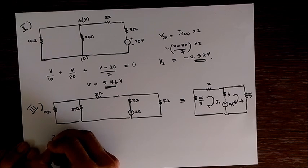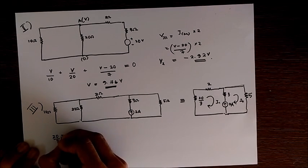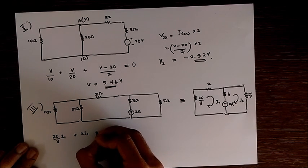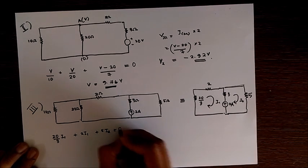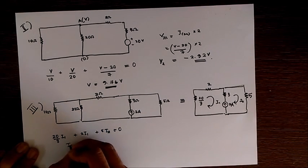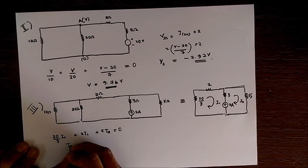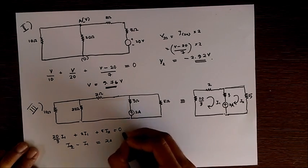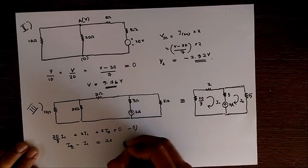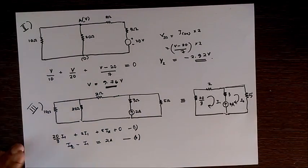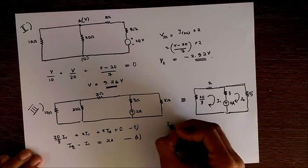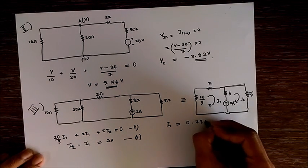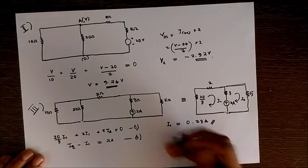Now I'm writing the super mesh equations or the loop equations. The first loop equation is 20 by 3 times I1 plus 2 times I1 plus 5 times I2 equal to 0. Similarly, second equation: I2 minus I1 equal to 2 amperes.